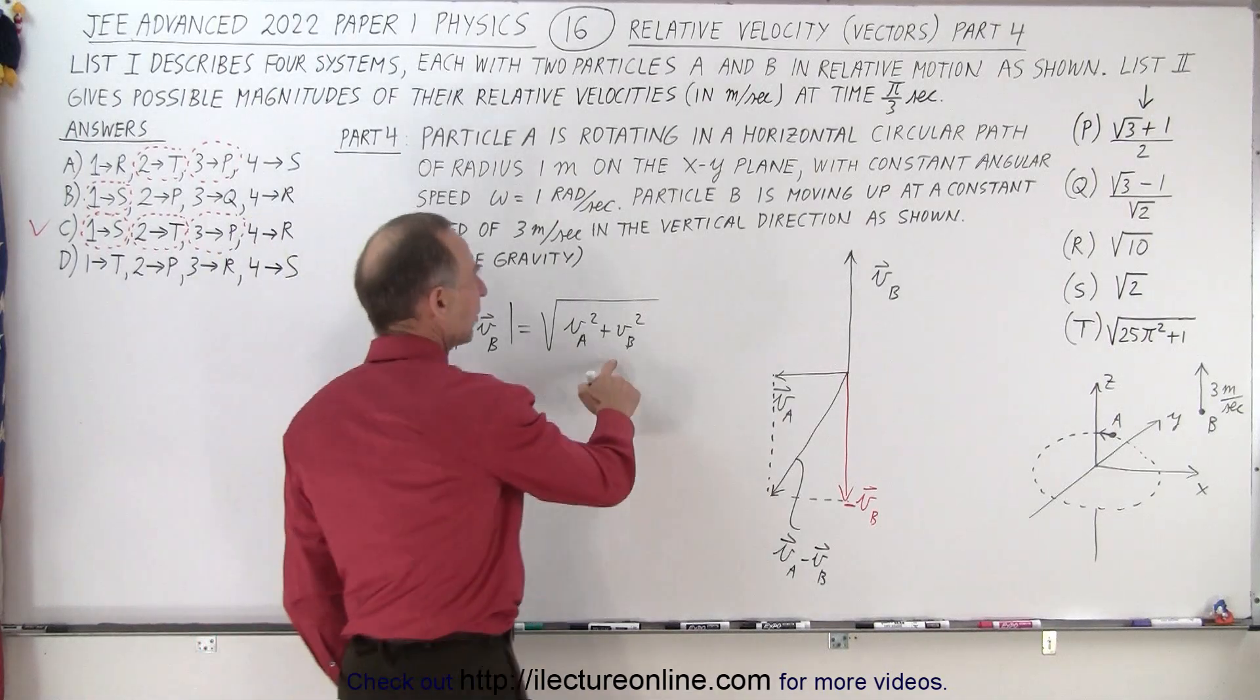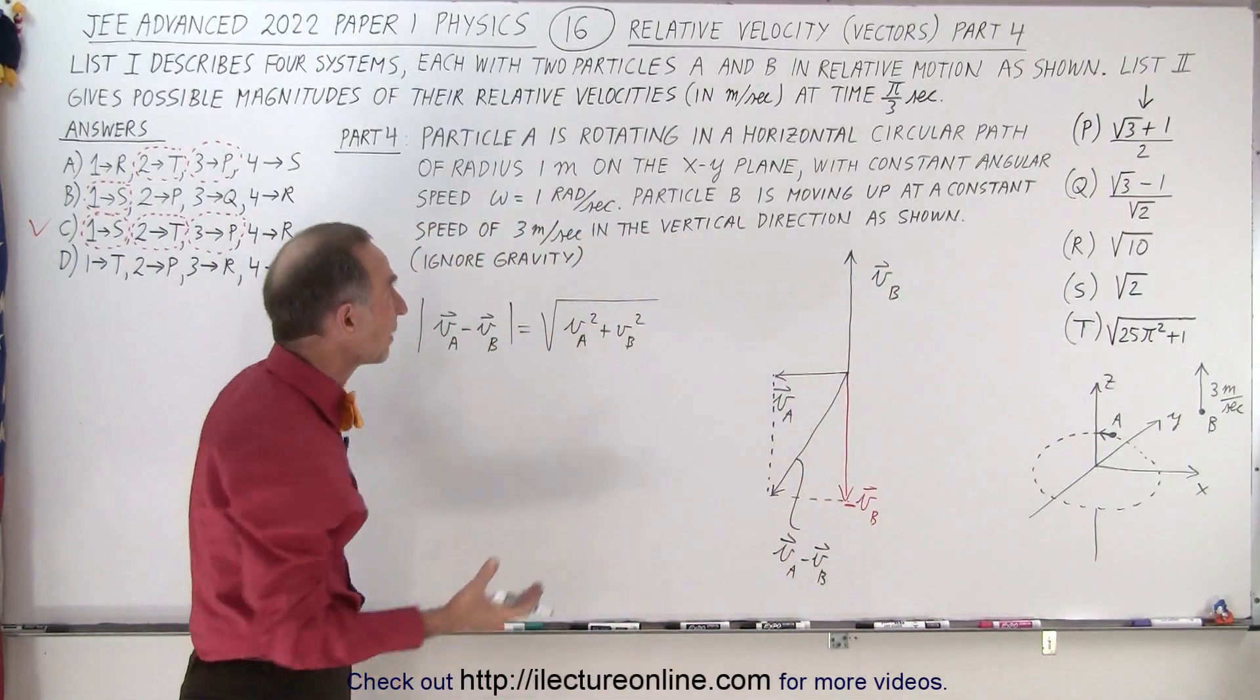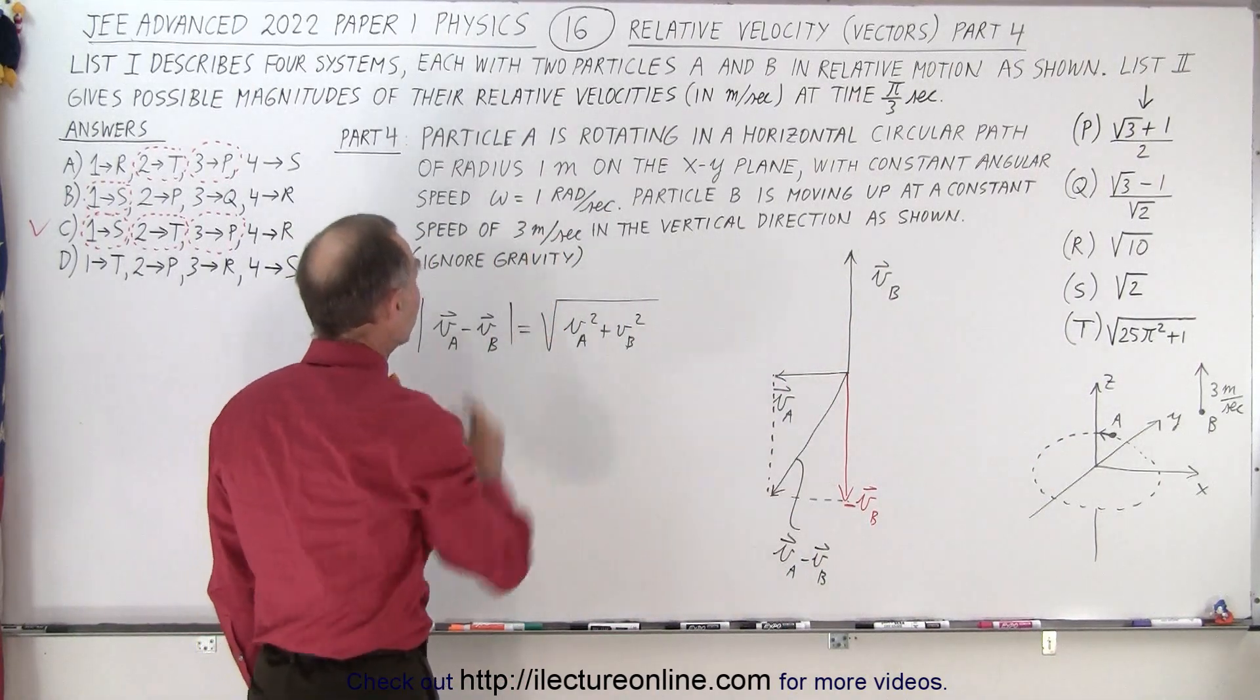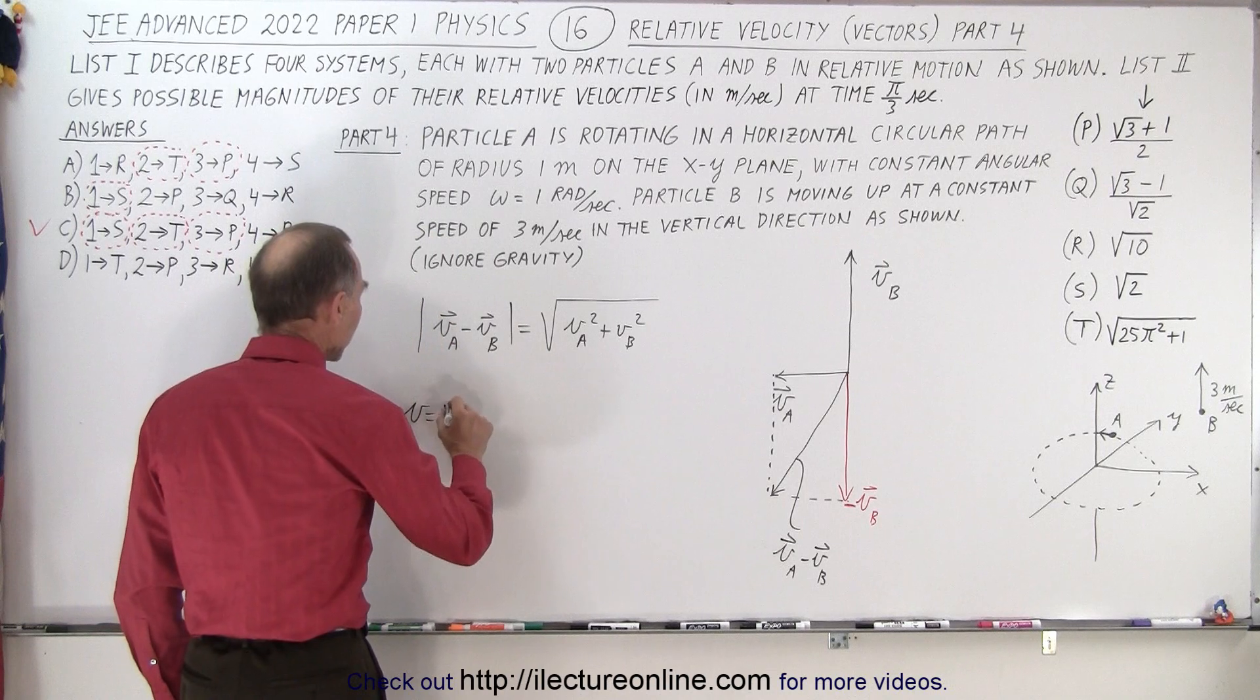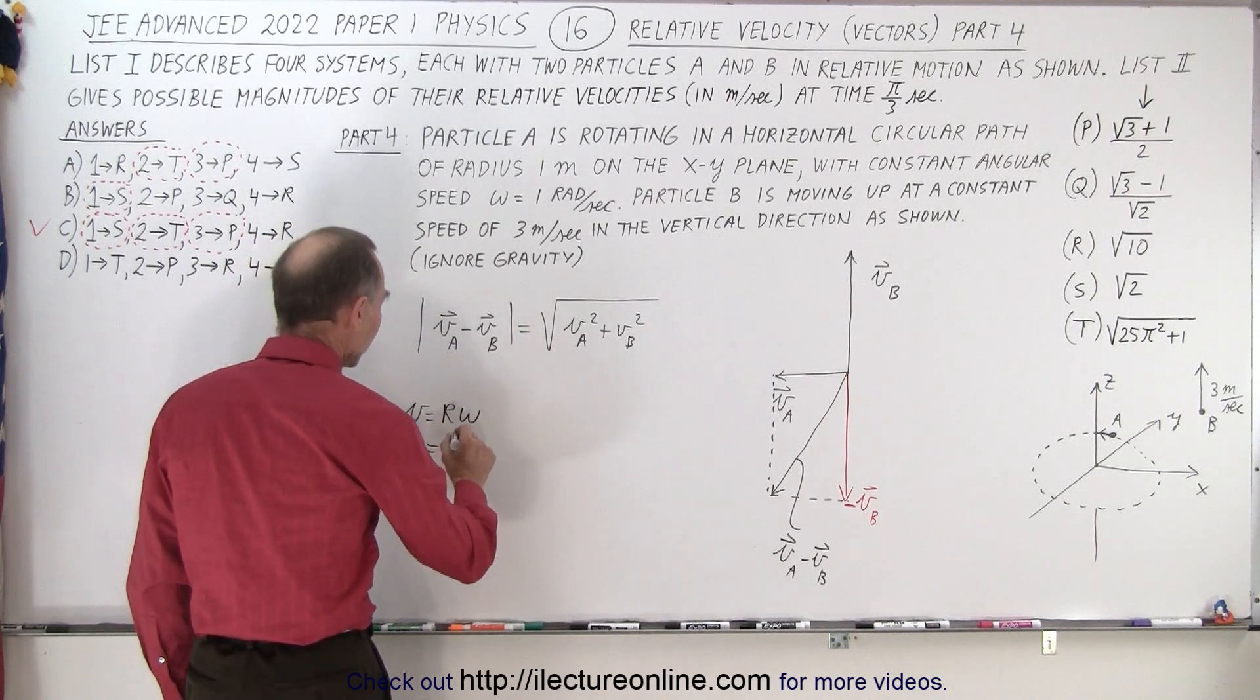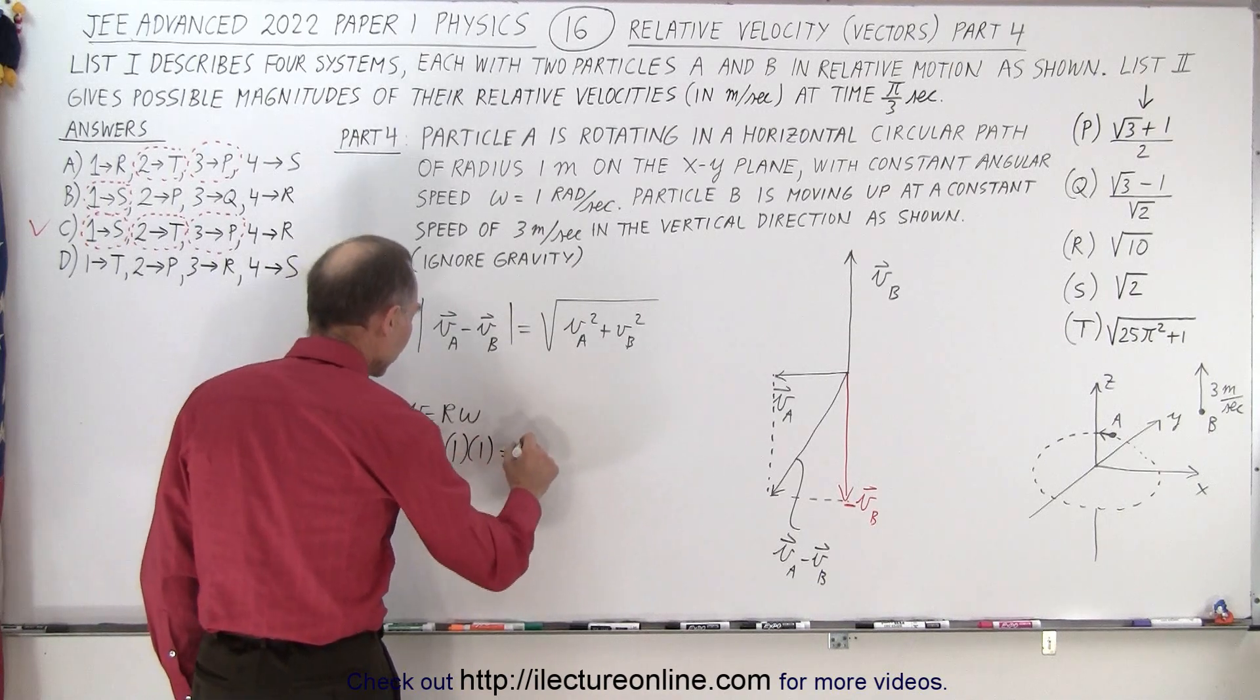So we know what velocity B is. They tell us it's 3 meters per second. But what about velocity A? They give it to us in terms of radians per second, the angular velocity. But we know that V is equal to R times omega. And in this case, the radius is 1. And omega is 1, which means velocity is 1.